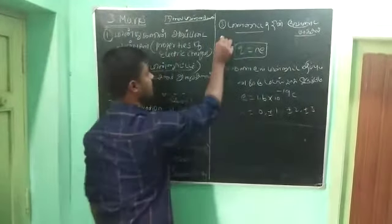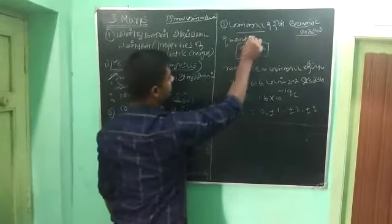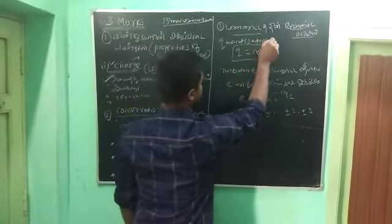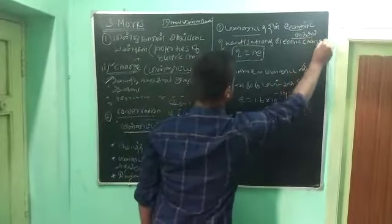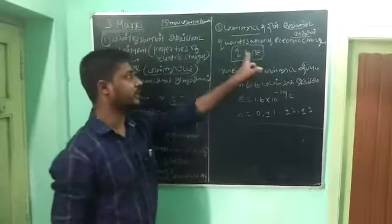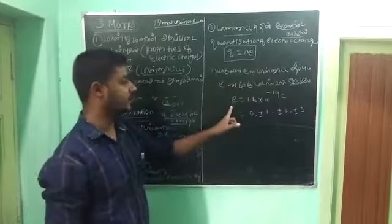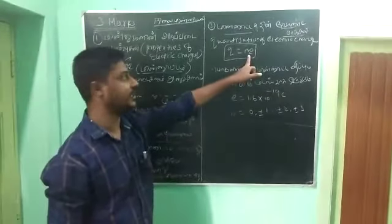This is the quantization of electric charge. Q equals NE, where Q is the charge and E is the charge of the electron.